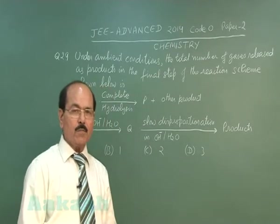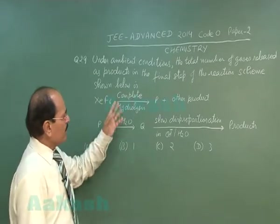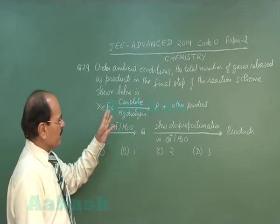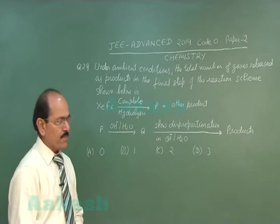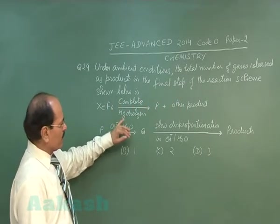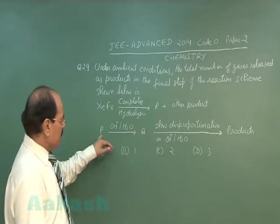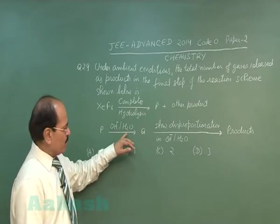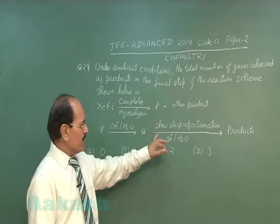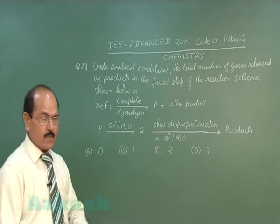Question number 29 of the paper: under ambient conditions, the total number of gases released as products in the final step of the reaction scheme shown below — xenon hexafluoride on complete hydrolysis gives P plus some other product; P reacts with OH⁻ in presence of water to give Q; Q in presence of OH⁻ and water on slow disproportionation gives products. These are the four options given.